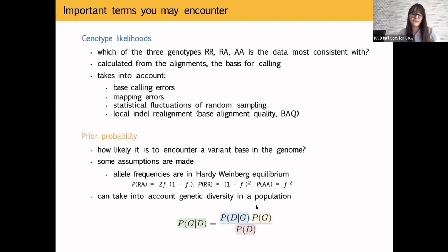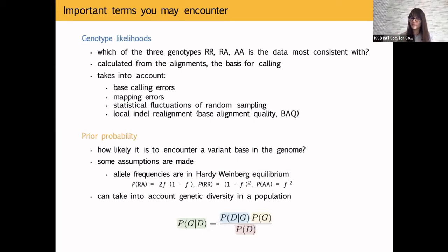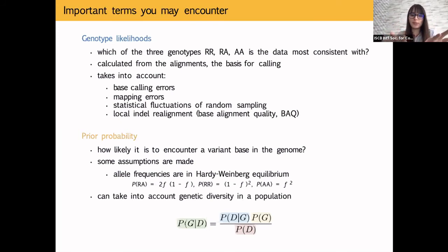This flexible prior makes Bayesian methods very powerful. Tools like GATK, bcftools/samtools mpileup use this approach and are what you will encounter in real life. This method gives you likelihoods for all possible genotypes, the most likely genotype call, and an associated quality score.